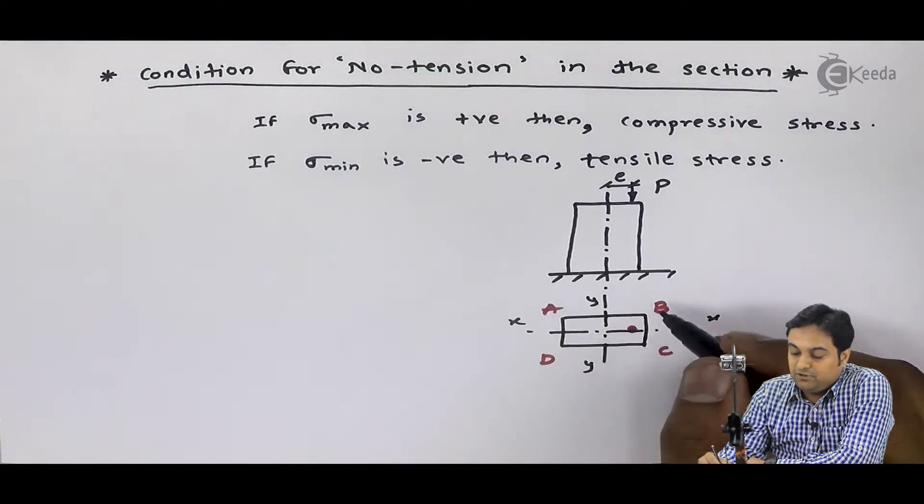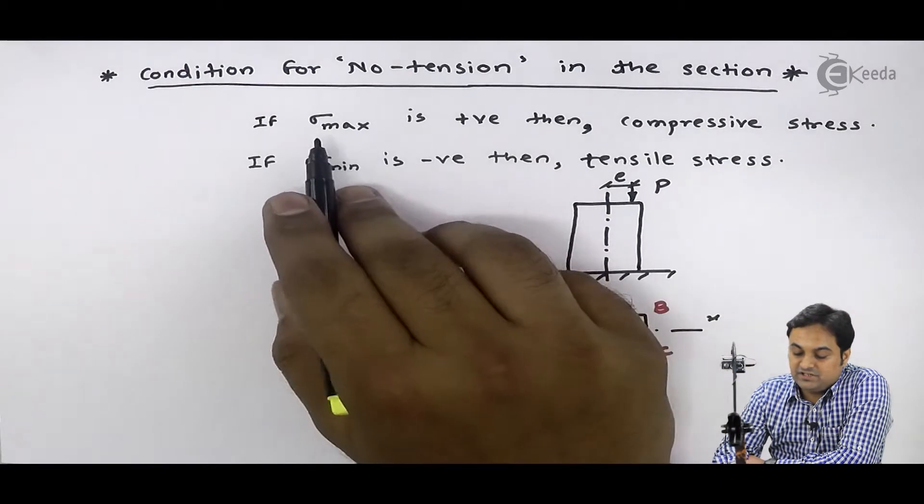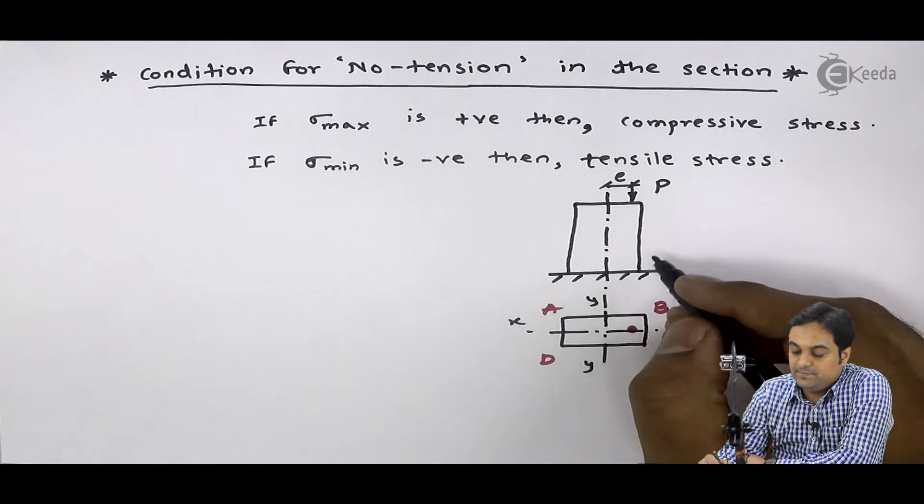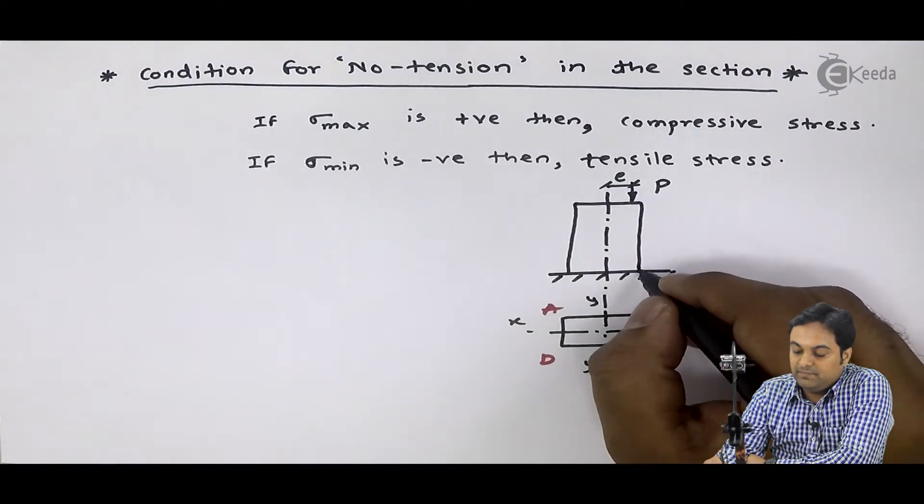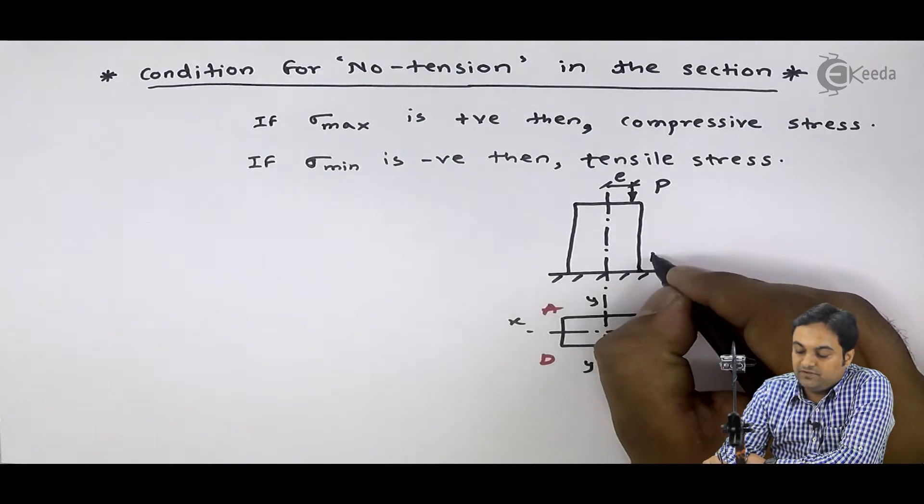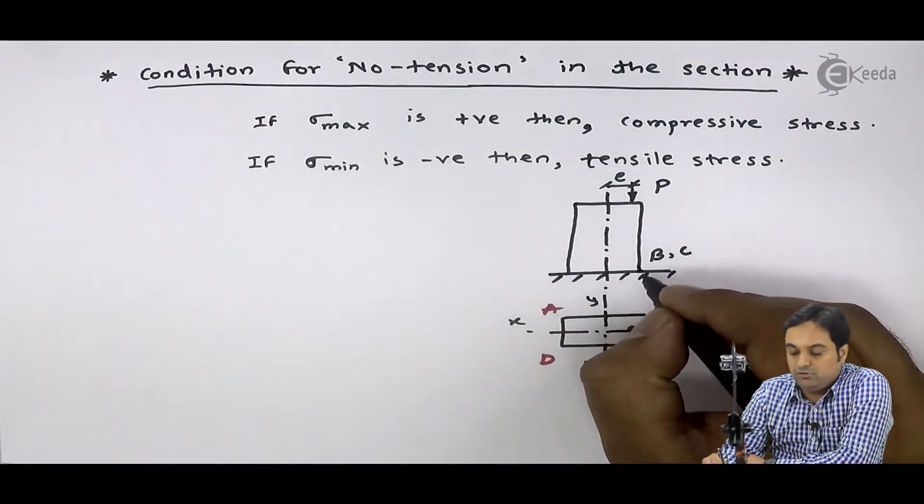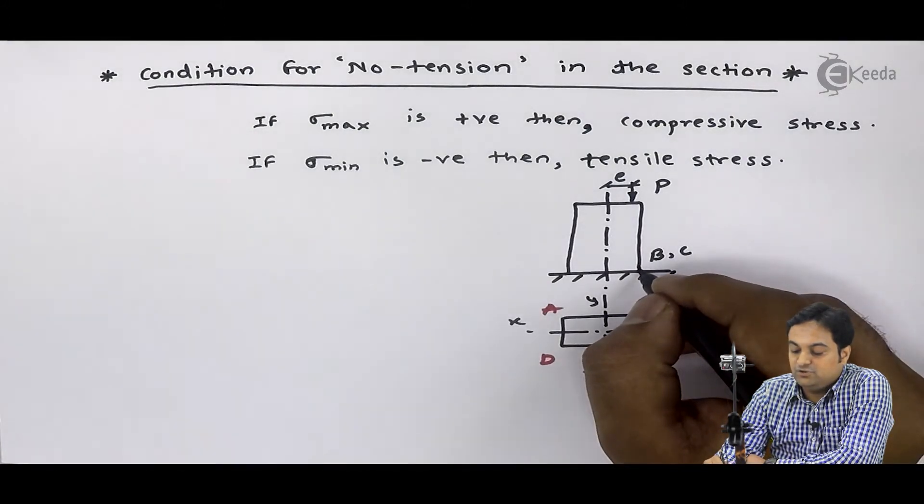Now, see because of maximum stress. If maximum stress is positive, maximum stress is at b, c. So if at b, c maximum stress is positive means b, c would be subjected to compressive stress. That is, this b, c end, it will be pressed to the ground because of compression.